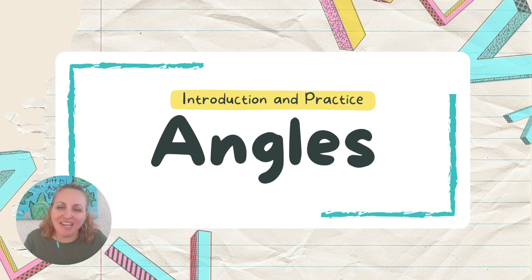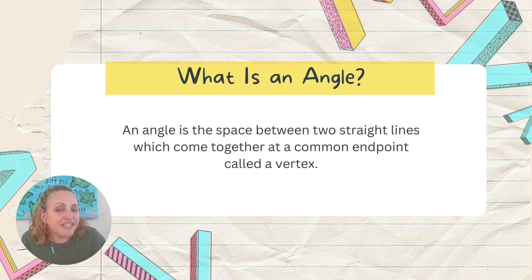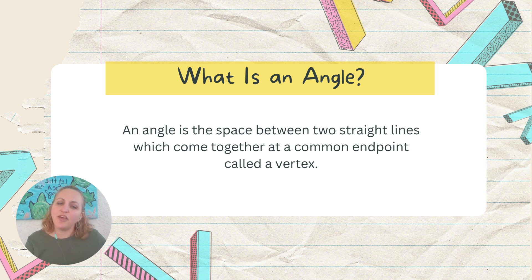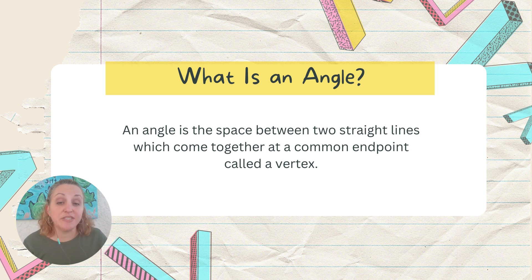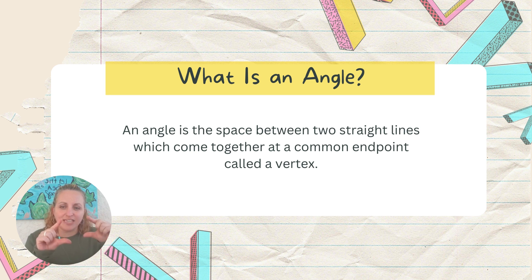Hey fourth graders, today we are going to begin our journey on learning about angles. The first thing we need to know is what an angle actually is. An angle is the space between two straight lines when they come together at an endpoint called a vertex. You have actually learned about angles in shapes — a triangle has three angles, which is actually what the word means: 'tri' means three angles, one at each of the points.